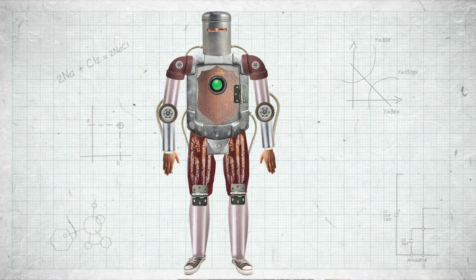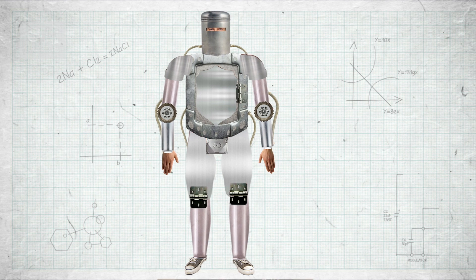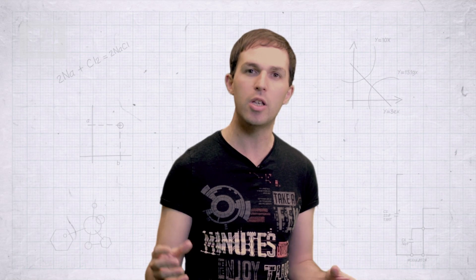So what would Iron Man be made of if it's not Iron? Well I reckon it would be some sort of alloy. That's a combination of metals that can end up having very different properties from the ones that you put in.